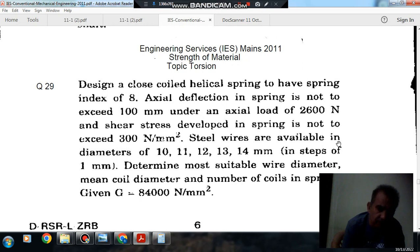Steel wires are available in diameters of 10, 11, 12, 13, and 14 mm in steps of 1 mm. Determine the most suitable wire diameter, mean coil diameter, and number of coils in spring. Given G is equal to 84000 N per mm square.